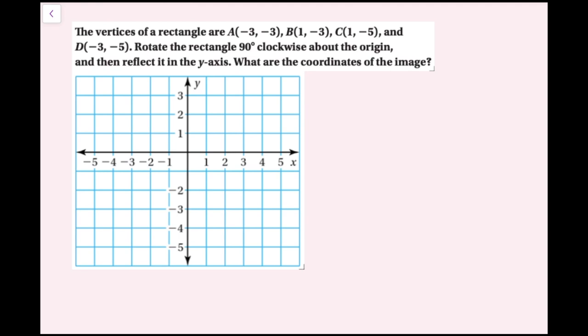For example three: the vertices of a rectangle are A(−3, −3), B(1, −3), C(1, −5), and D(−3, −5). Rotate the rectangle 90 degrees clockwise about the origin, then reflect it in the y-axis. First I'll plot the rectangle at those four vertices.